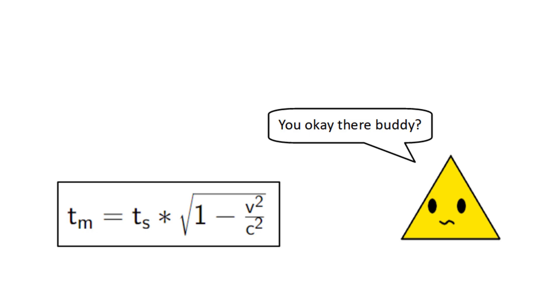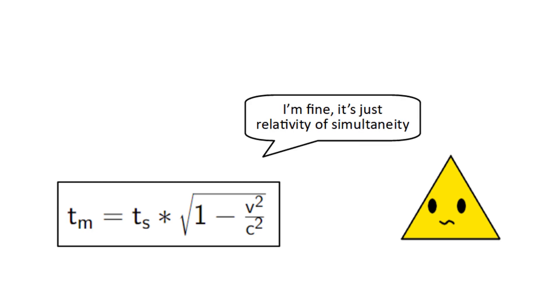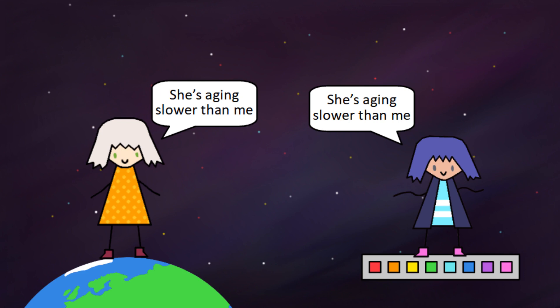and it's just a natural consequence of relativity called relativity of simultaneity, and there's a sense in which both perspectives are true at the same time. If you want to find out how this is possible, well that will be the subject of part 3.